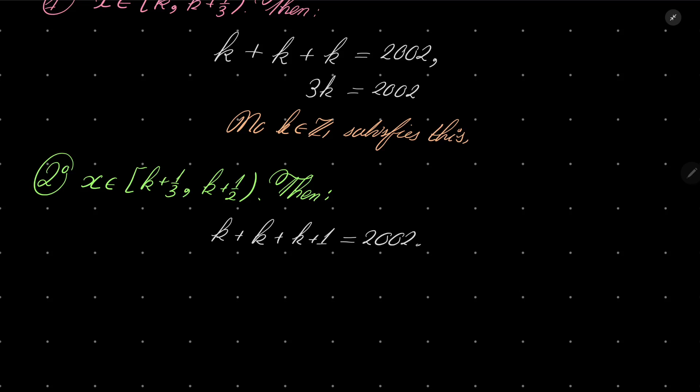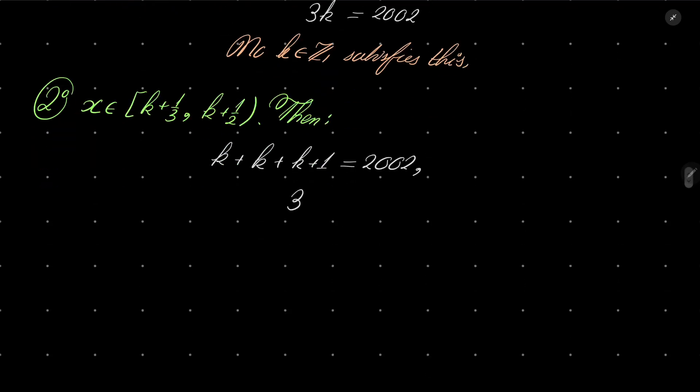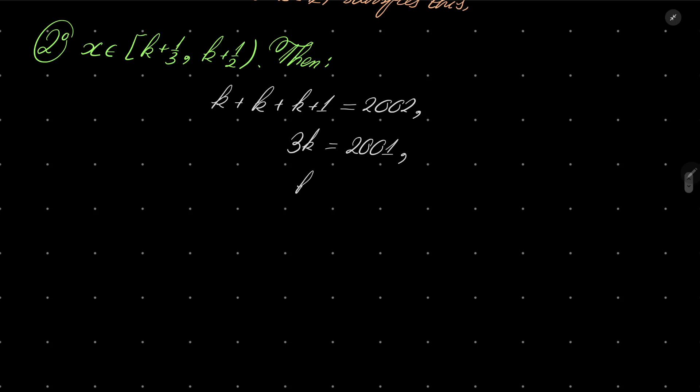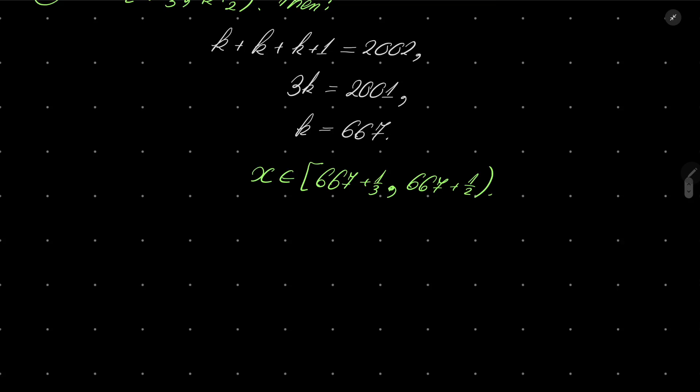Equals 2002. And that means that 3k equals 2001, and 2001 is divisible by 3, and we get 667. So our solutions in this case: x is in the interval 667 plus 1/3 to 667 plus 1/2. So every number from this interval satisfies our equation.